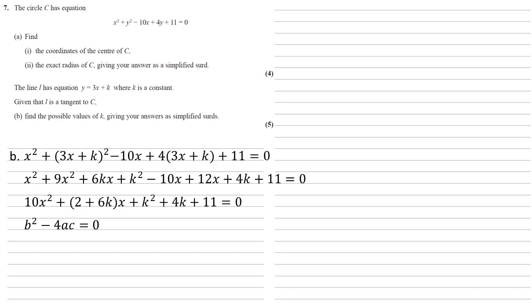We're going to put them in using our 2 plus 6k is b, 10 is a, and k squared plus 4k plus 11 is c. That will give us 2 plus 6k all squared minus 4 times 10 times k squared plus 4k plus 11 equals 0.